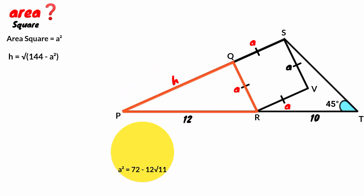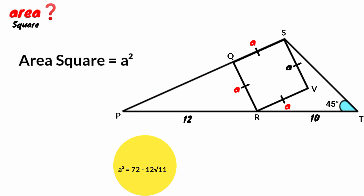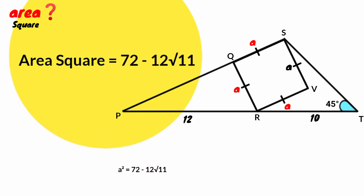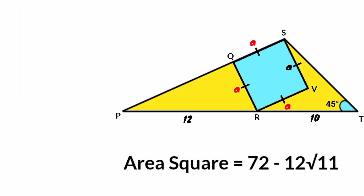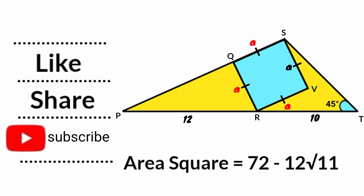Therefore this is the right solution. Substituting: the area of the square equals 72 minus 12 root 11. Thank you for watching. Please like, share and subscribe, and also turn on notifications.